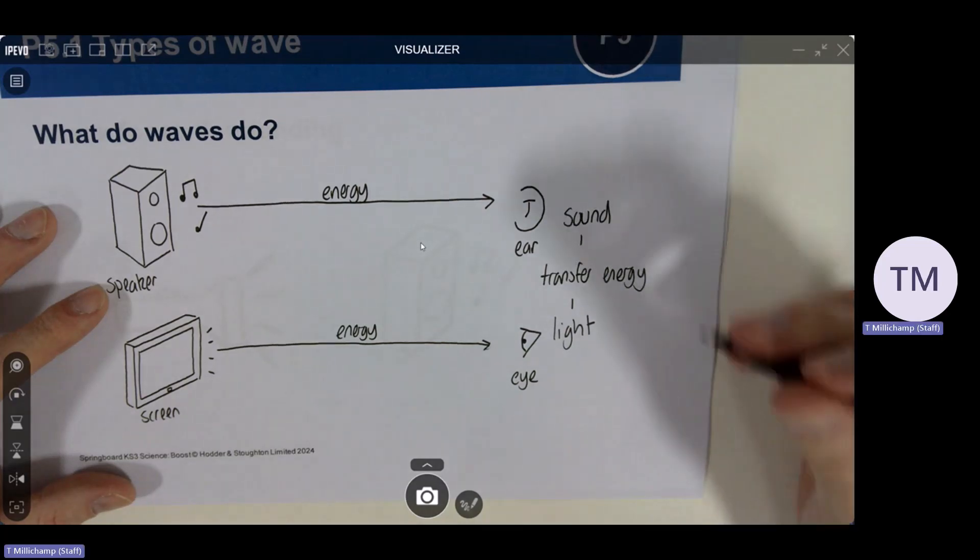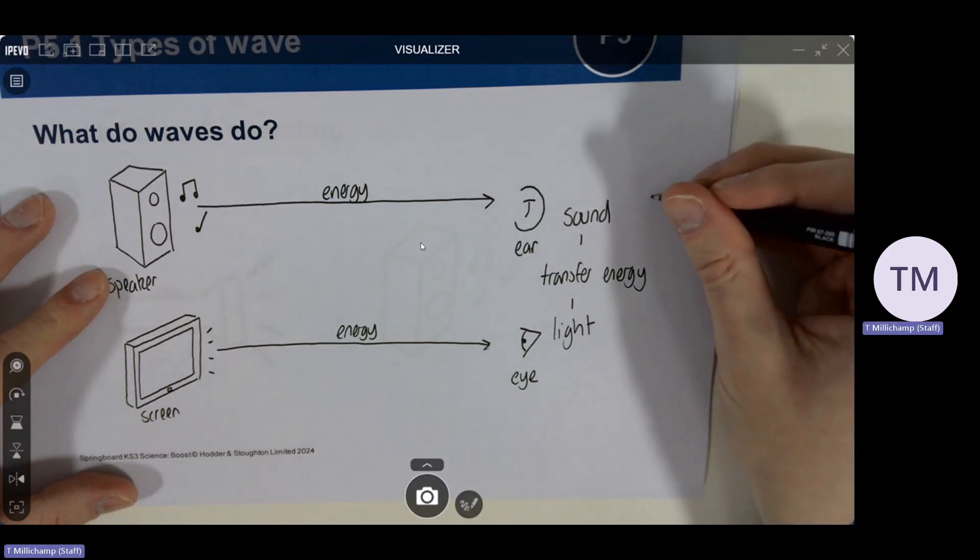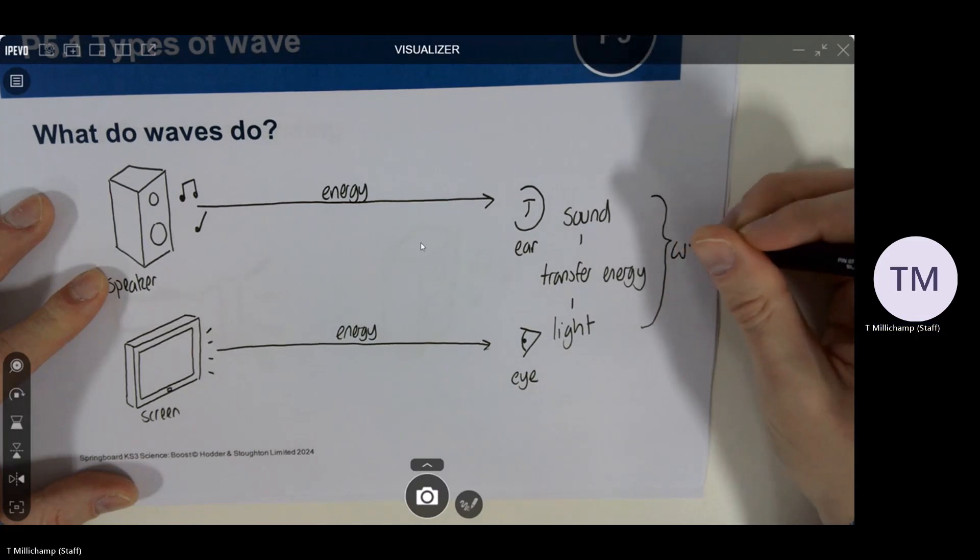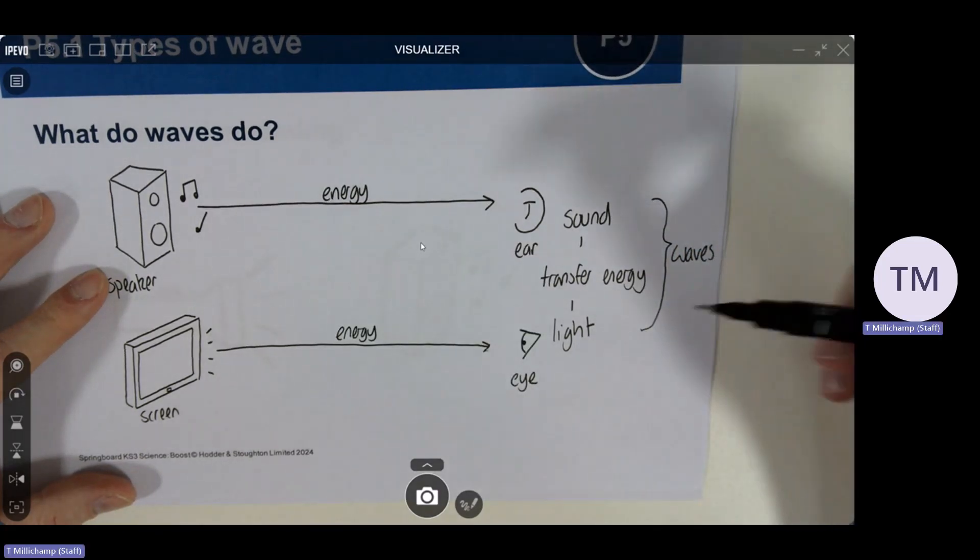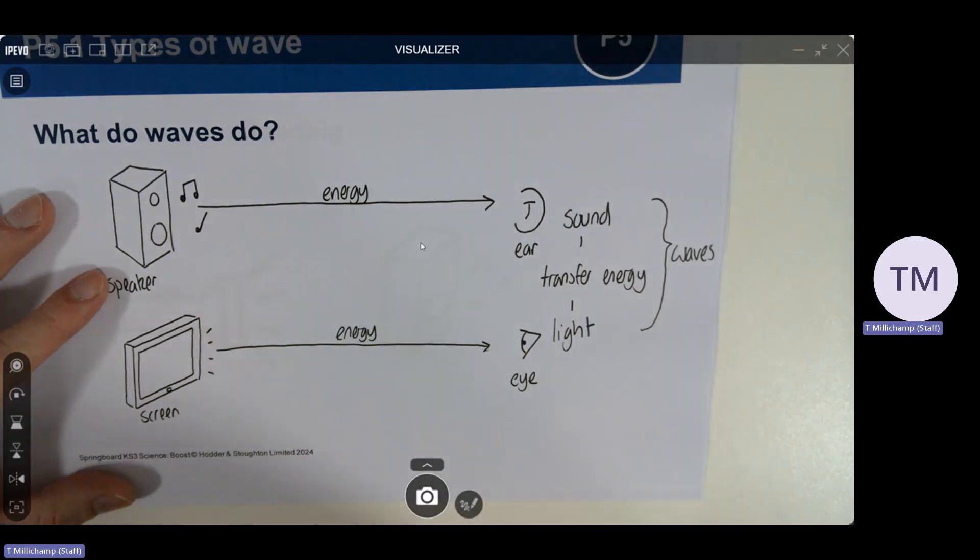The reason that sound and light transfer energy is that they are both examples of waves. Waves have the property of transferring energy. That is all that waves do.